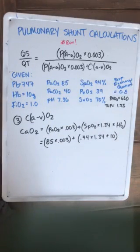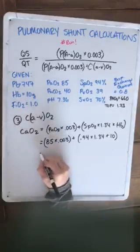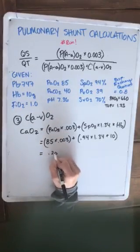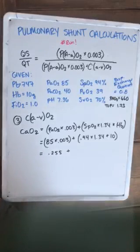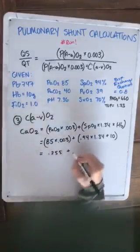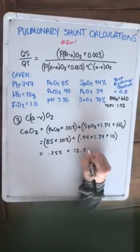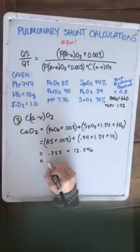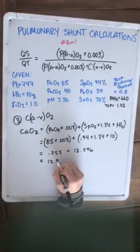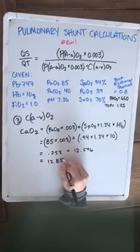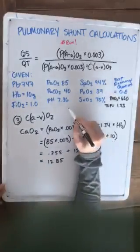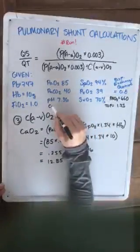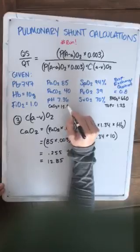85 times 0.003 gives us 0.255, and our second pair of parentheses will be 0.94 times 1.34 times 10, which gives us 12.596. Add those together and you get 12.851, and we'll drop the 1. So we'll write that up here as well. Our CaO2 is equivalent to 12.85.